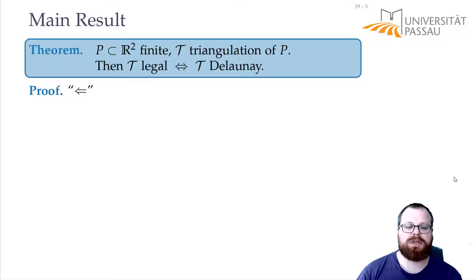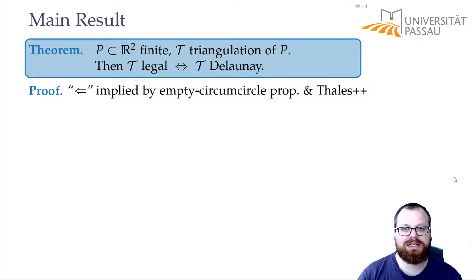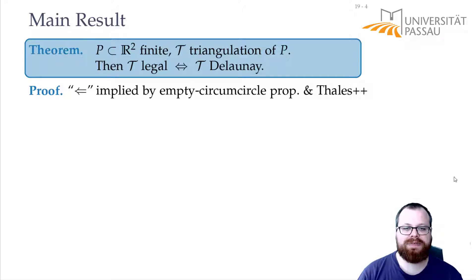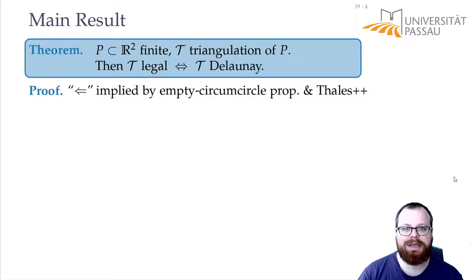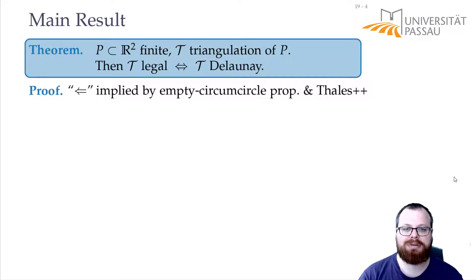For the direction from Delaunay to legal, this is quite easy. We can just combine the empty circumcircle property and Thales++. For every triangle, the circumcircle is empty. That means if I take any edge of the triangle and any other vertex, it lies outside the circle, so that gives us a smaller angle.